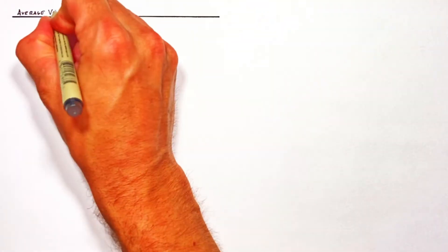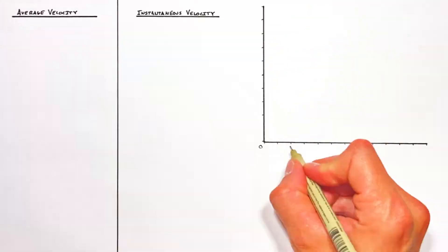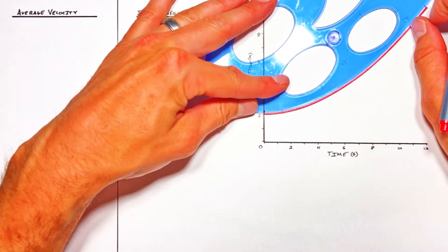Alright YouTube, today I'm going to explain both average and instantaneous velocity to you using a position versus time graph of some object that's in motion.